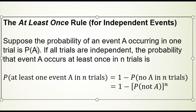So the rule is this: suppose the probability of an event A occurring in one trial is P of A. If all trials are independent, the probability that event A occurs at least once in N trials is this formula. The probability of at least one event A in N trials is equal to one minus the probability of A never occurring in N trials — or in other words, one minus the probability of not-A to the Nth power.